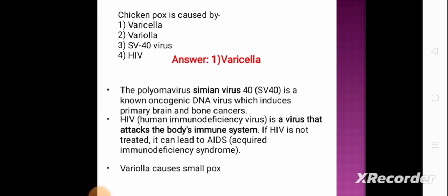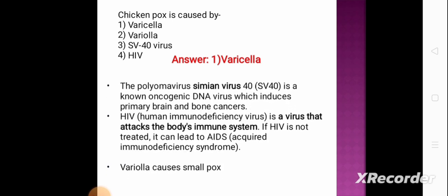Next question: chickenpox is caused by — option 1: varicella, option 2: variola, option 3: SV40 virus, option 4: HIV. The correct answer is option 1, varicella. SV40 (simian virus 40) is a known oncogenic DNA virus that induces primary brain and bone cancer. HIV (human immunodeficiency virus) attacks the body's immune system and causes AIDS (acquired immunodeficiency syndrome). Variola causes smallpox.